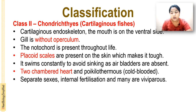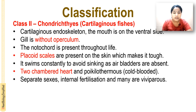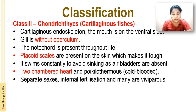Next is Chondrichthyes — that is cartilaginous fishes. They have a cartilaginous endoskeleton. The mouth is on the ventral side. Gills are without operculum — operculum means a covering or opening. A notochord is present throughout the life. Placoid scales are present on the skin, which make it tough.